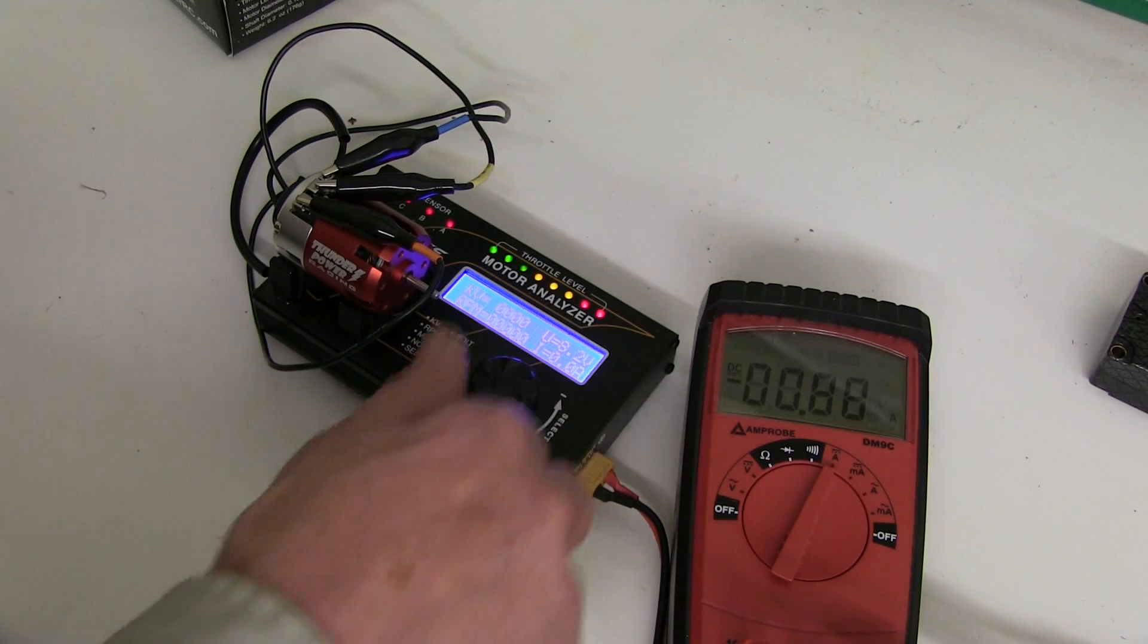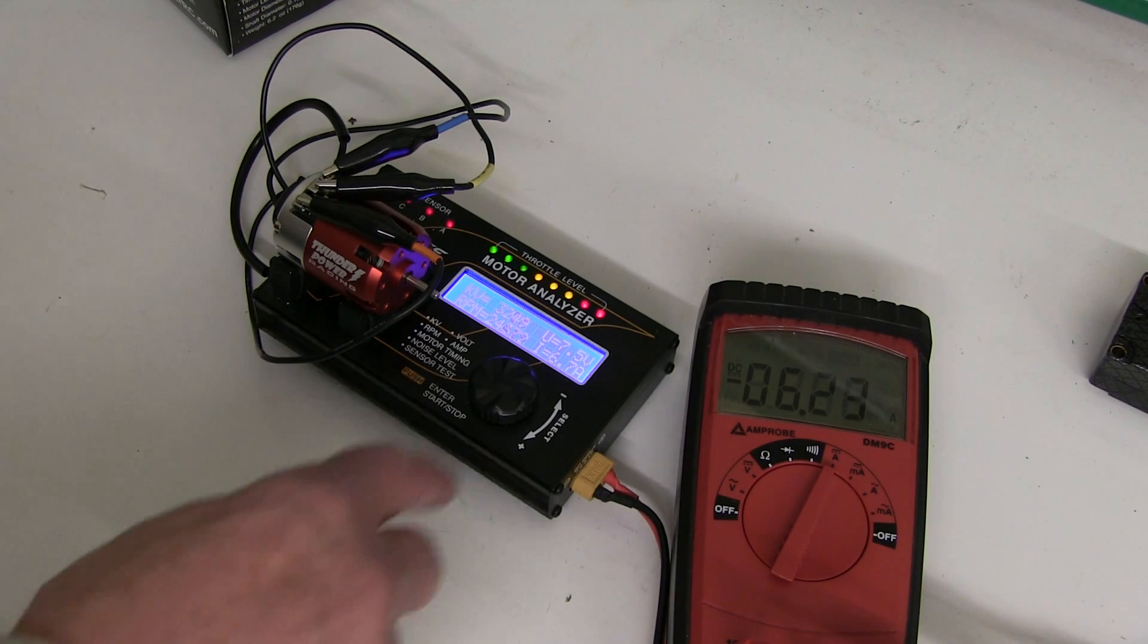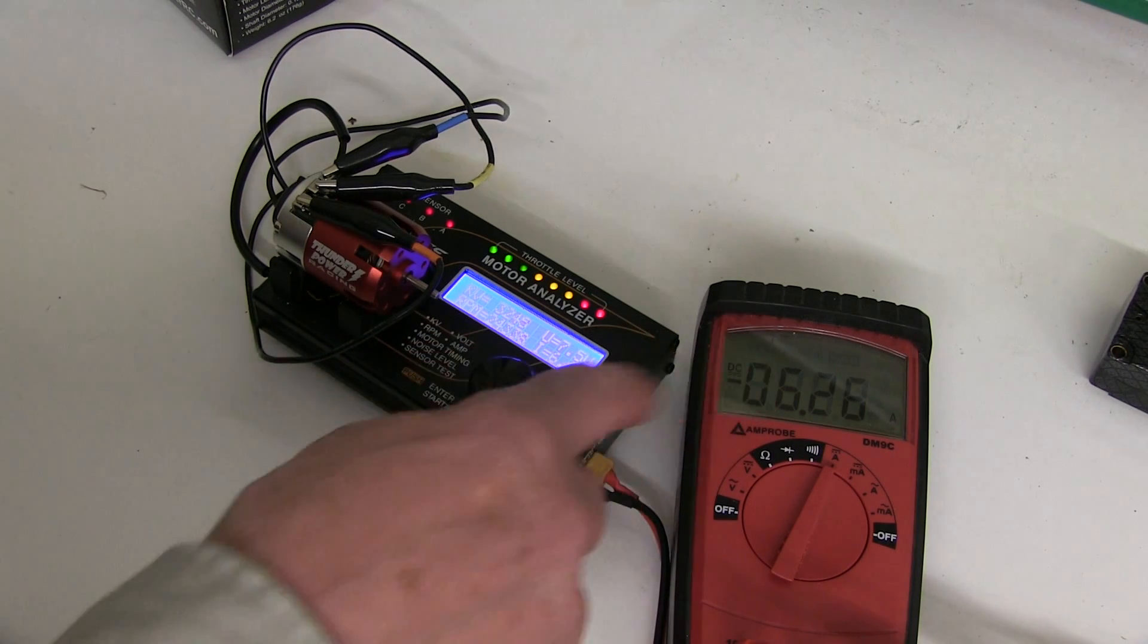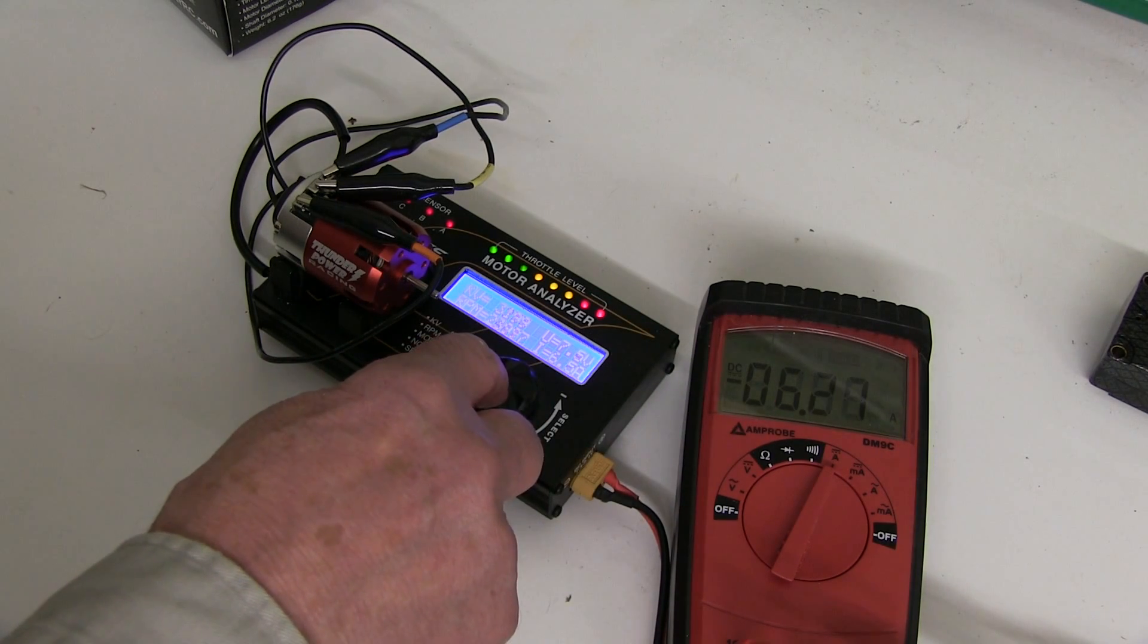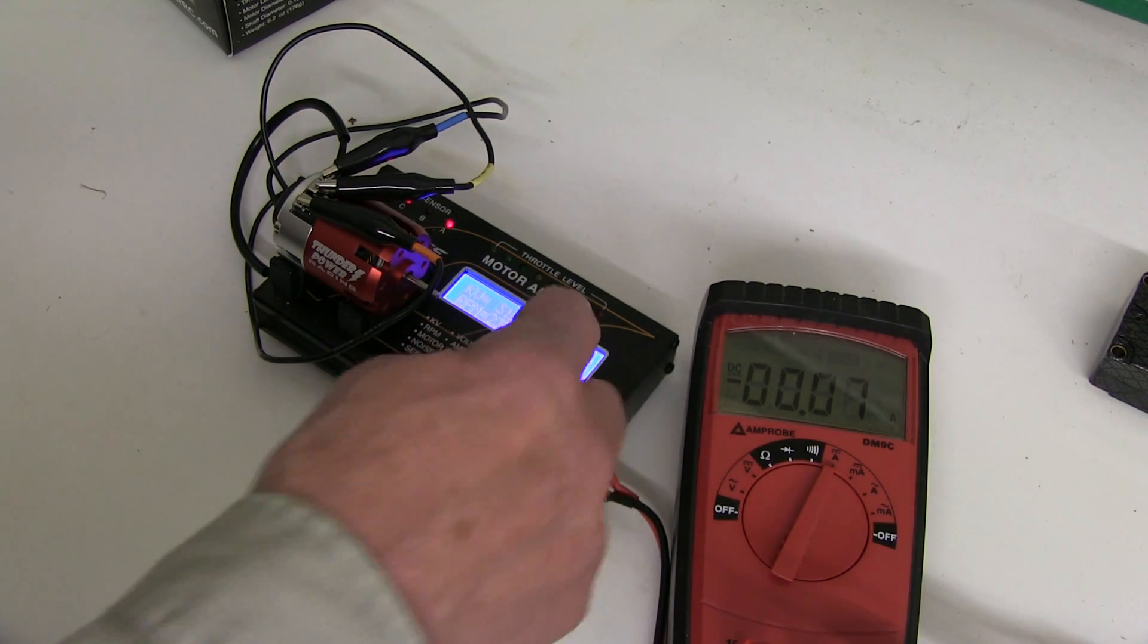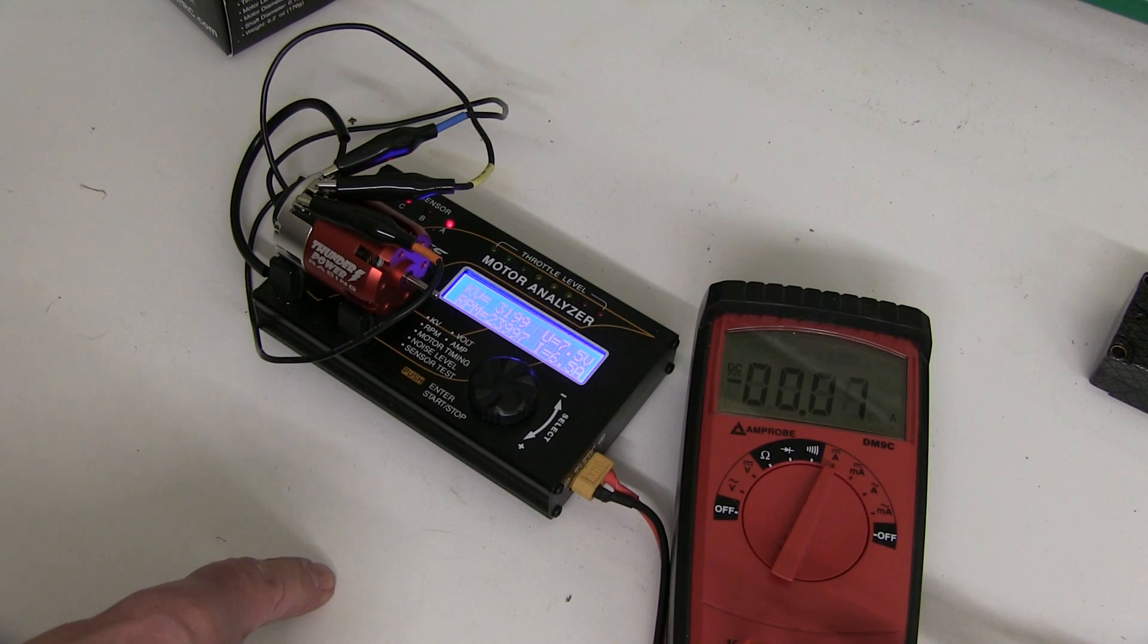Sounds really good doesn't it? 6.5 amps, drawing 6.3 on there. That's really fast, 3199 KV, 23,997 RPM, 6.5 amps.